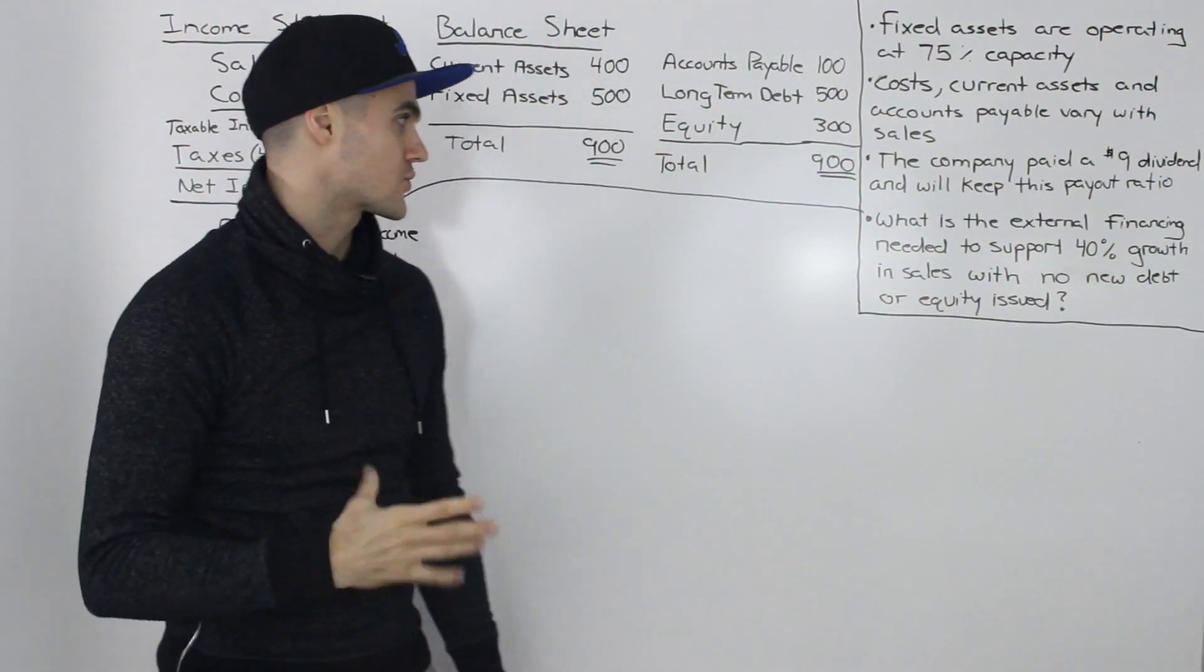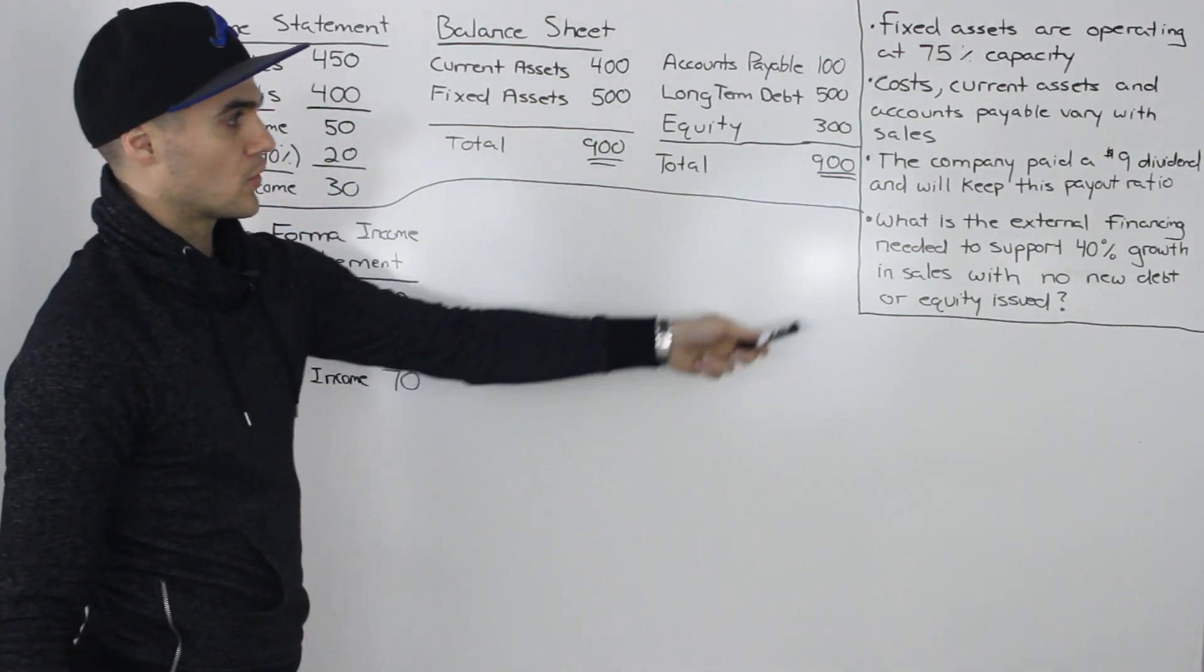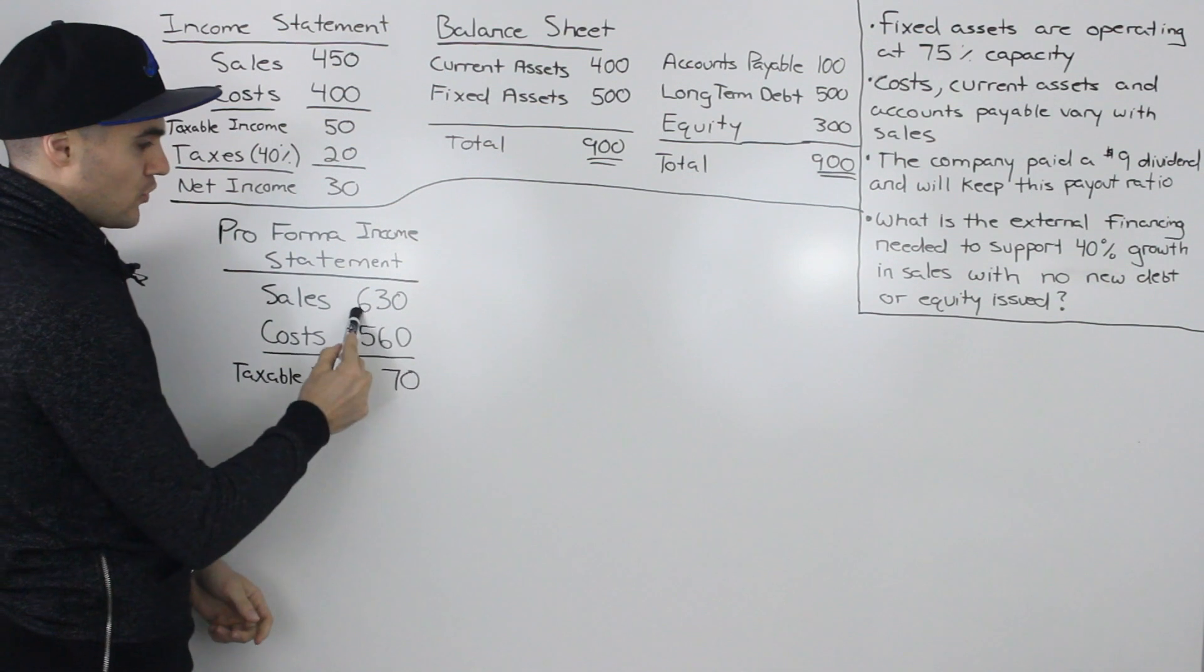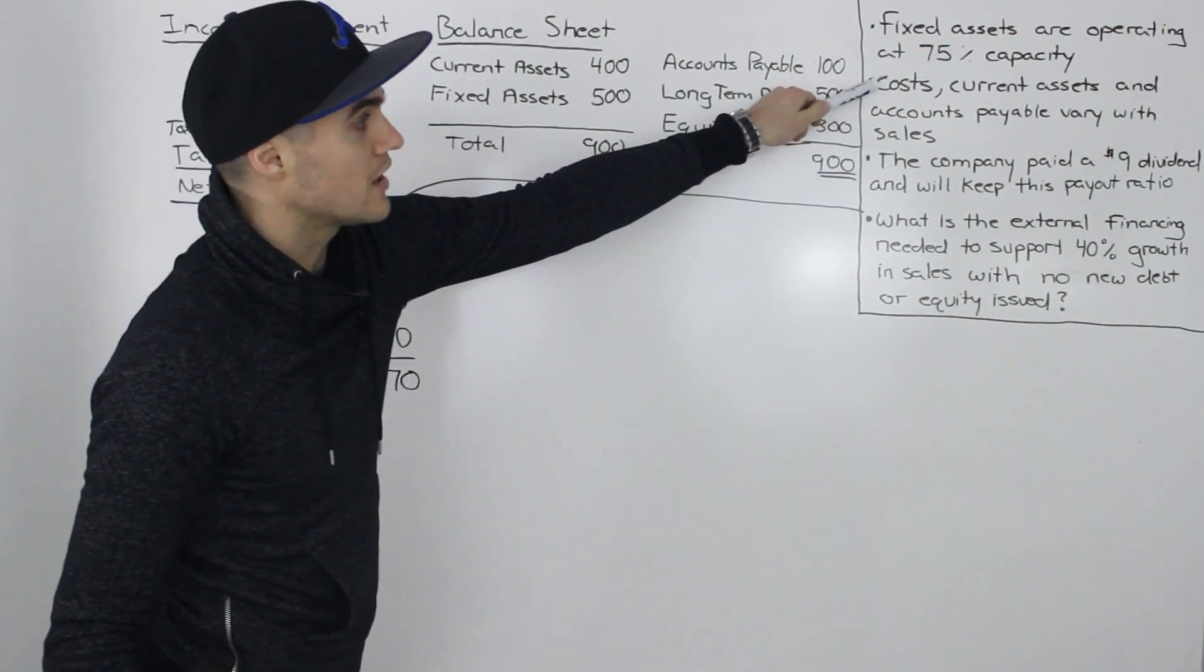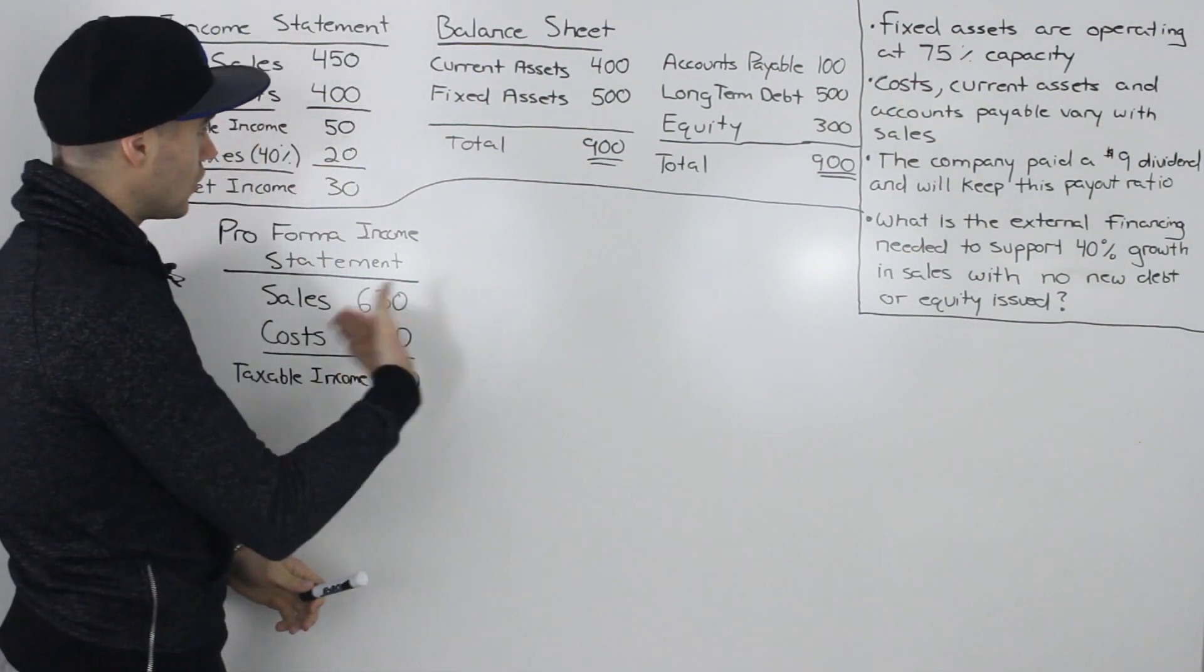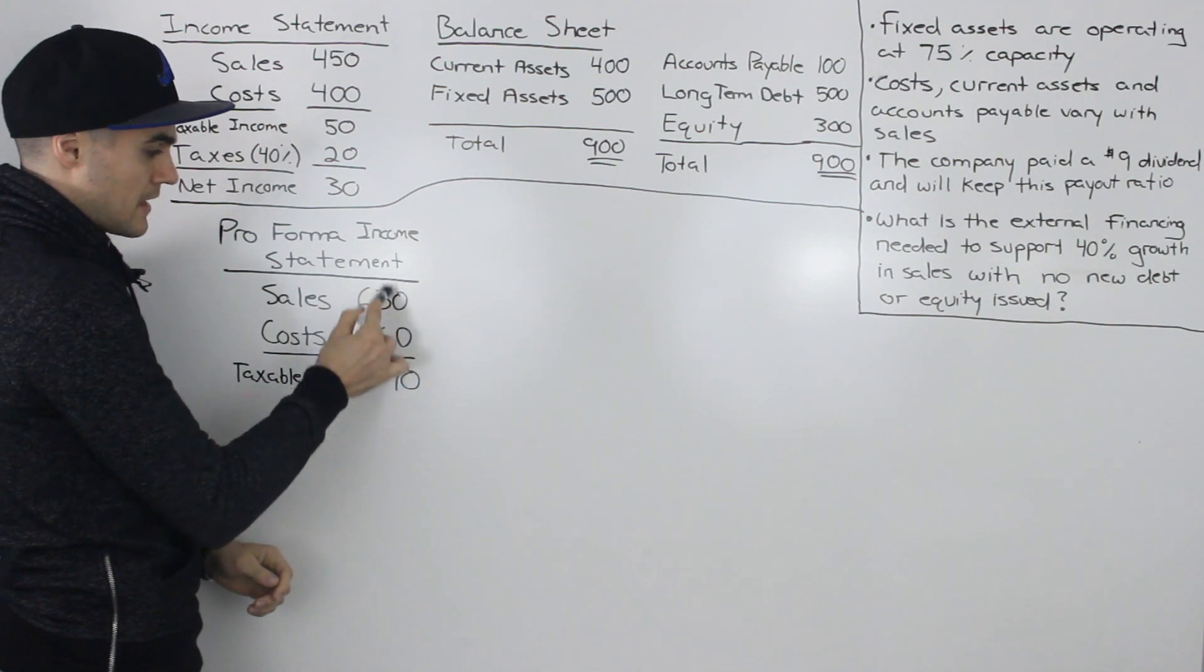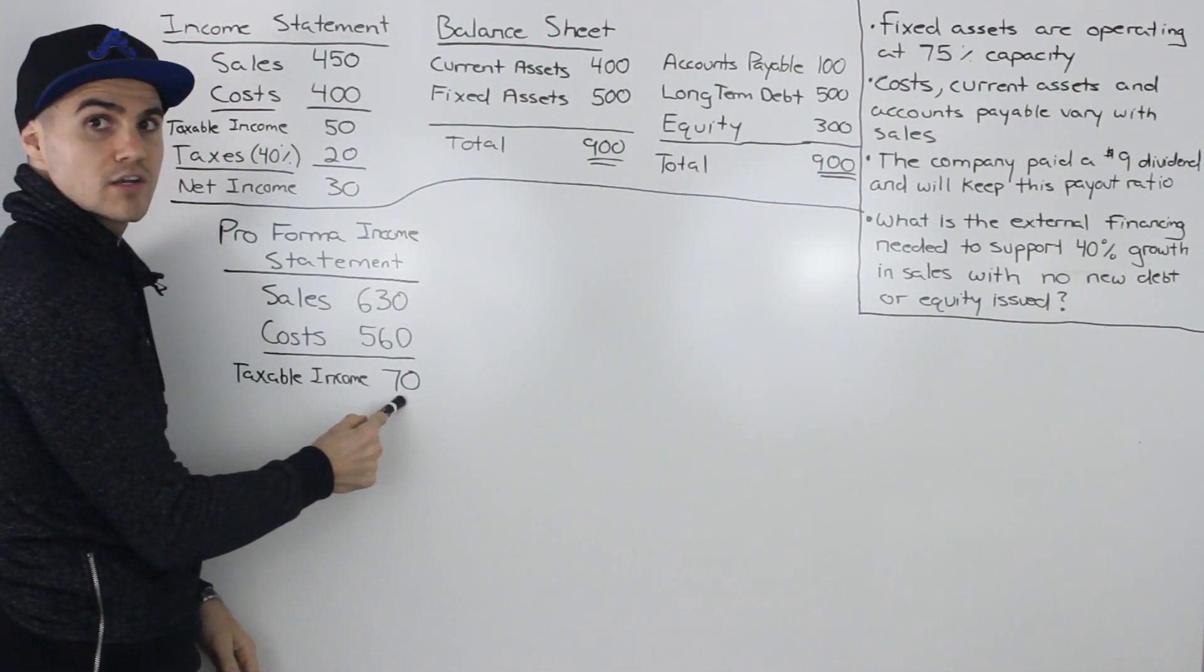So the first step you want to do is create a pro forma income statement. We're told that we're growing the sales by 40%. So 450 times 1.4 would give us new sales of 630. We're also told that the costs vary with the sales. So they're also going to grow by 40%. So 400 times 1.4 gives us 560. And then subtracting those two figures, we get taxable income of $70.